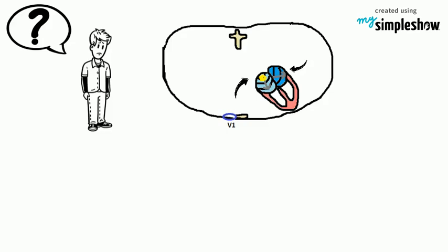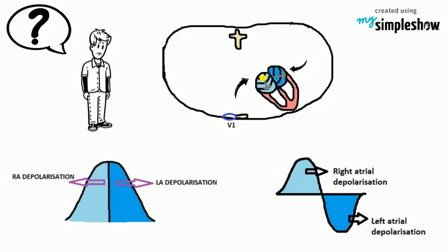For detecting right atrial and left atrial enlargement, the leads which are more specific are lead II and V1. Look here in this picture, you can see the P-wave is the net depolarization of both atria.